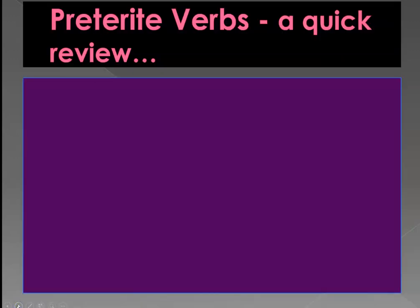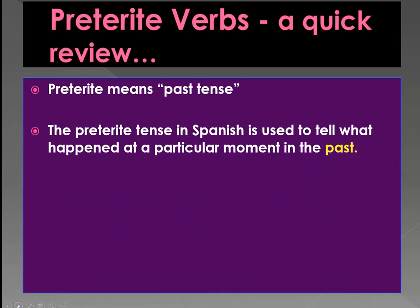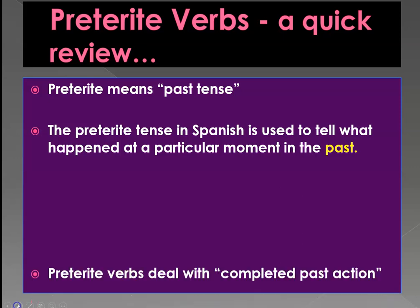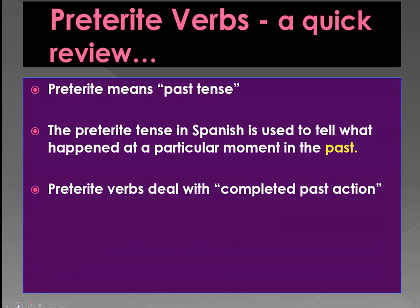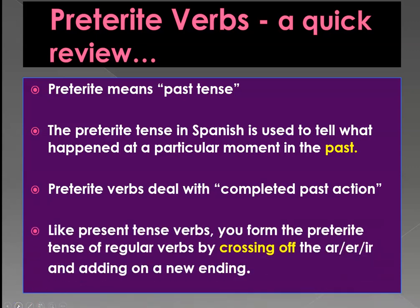Let's do a quick review of the preterite tense verbs. Preterite means past tense. The preterite tense in Spanish is used to tell what happened at a particular moment in the past. Preterite verbs deal with a completed past action. Like present tense verbs, you form the preterite tense of a regular verb by crossing off the ER or IR and adding a new ending.